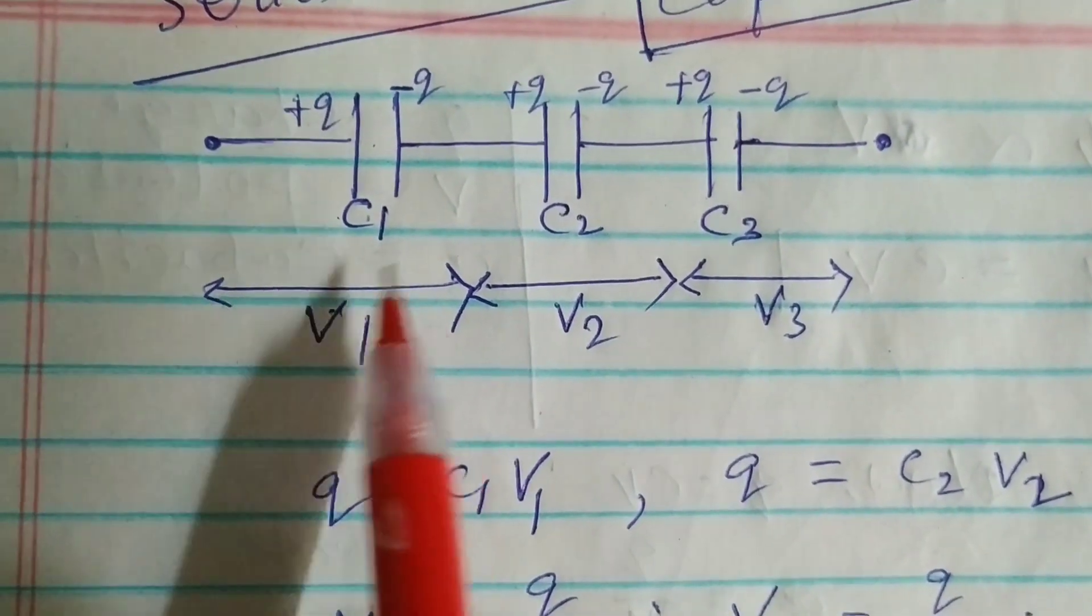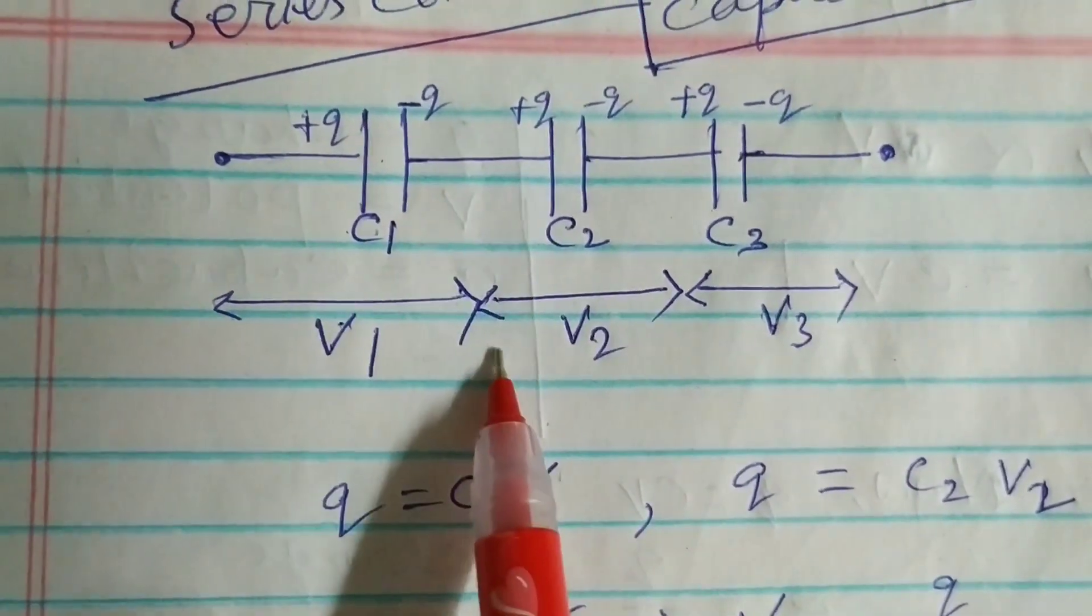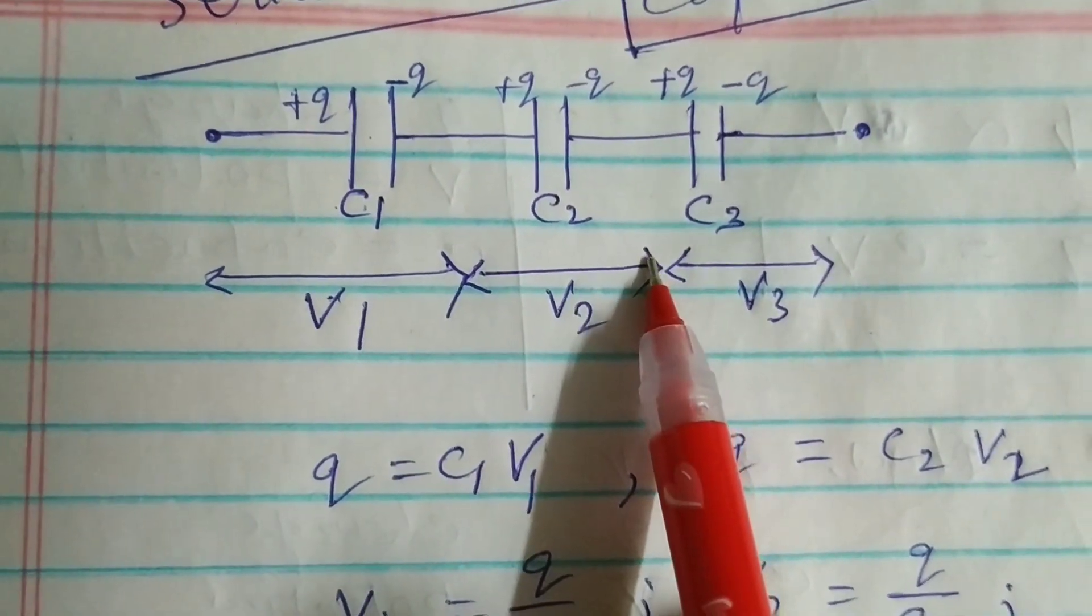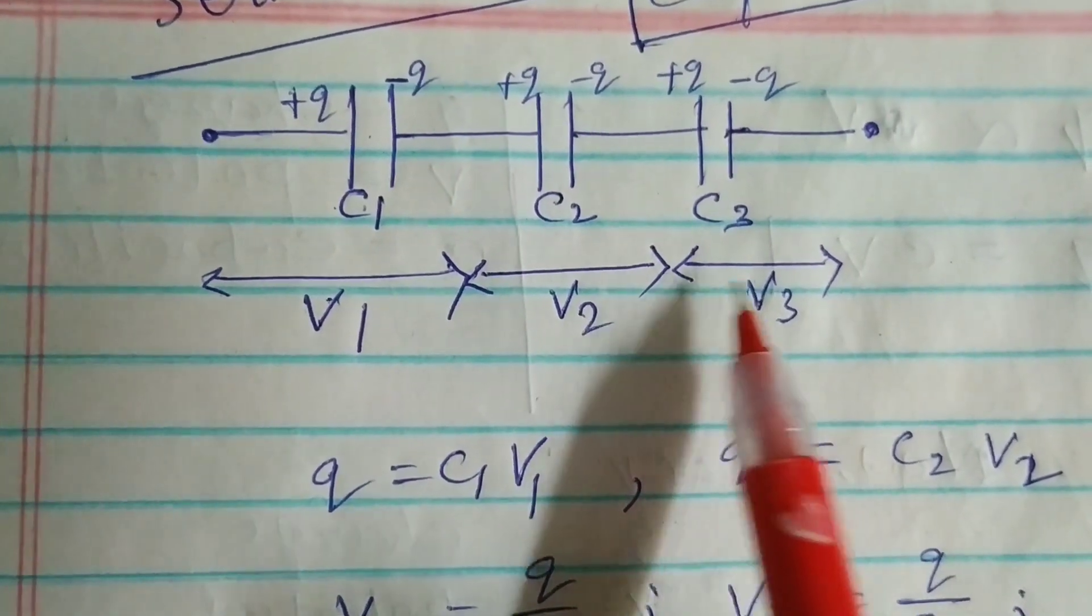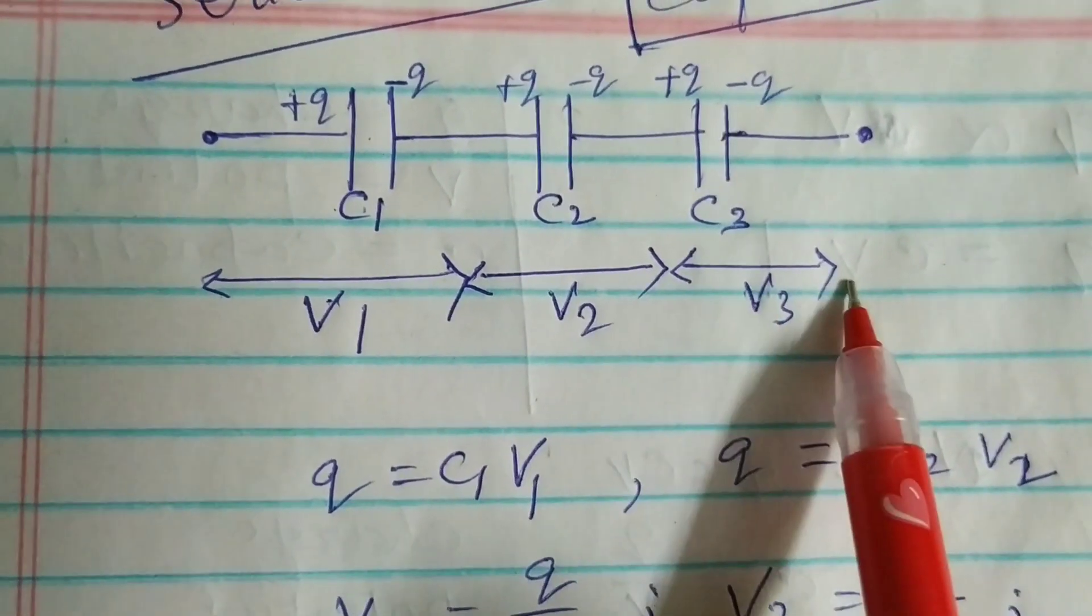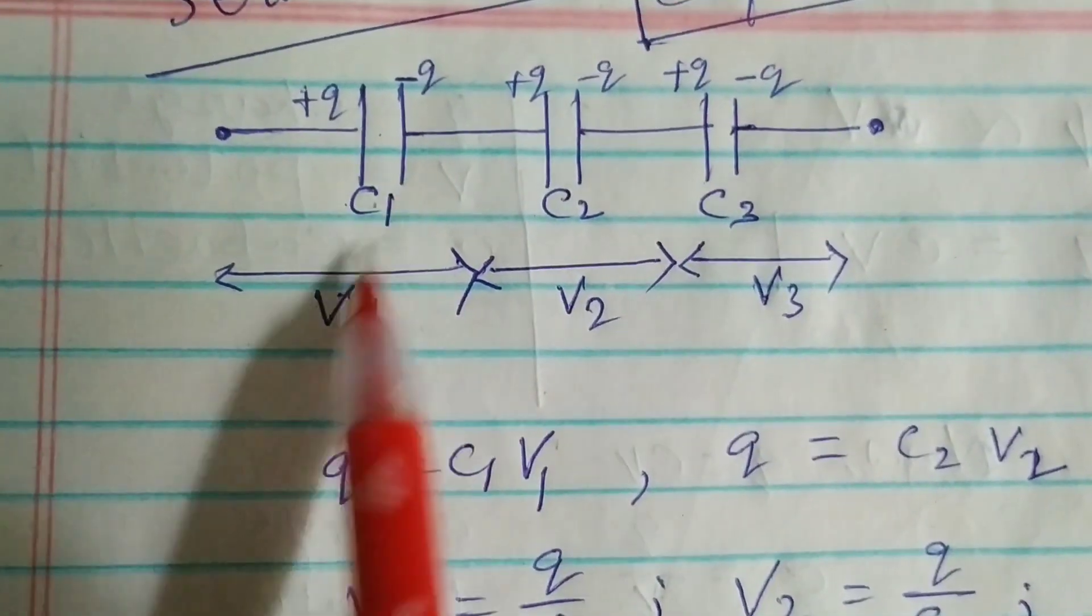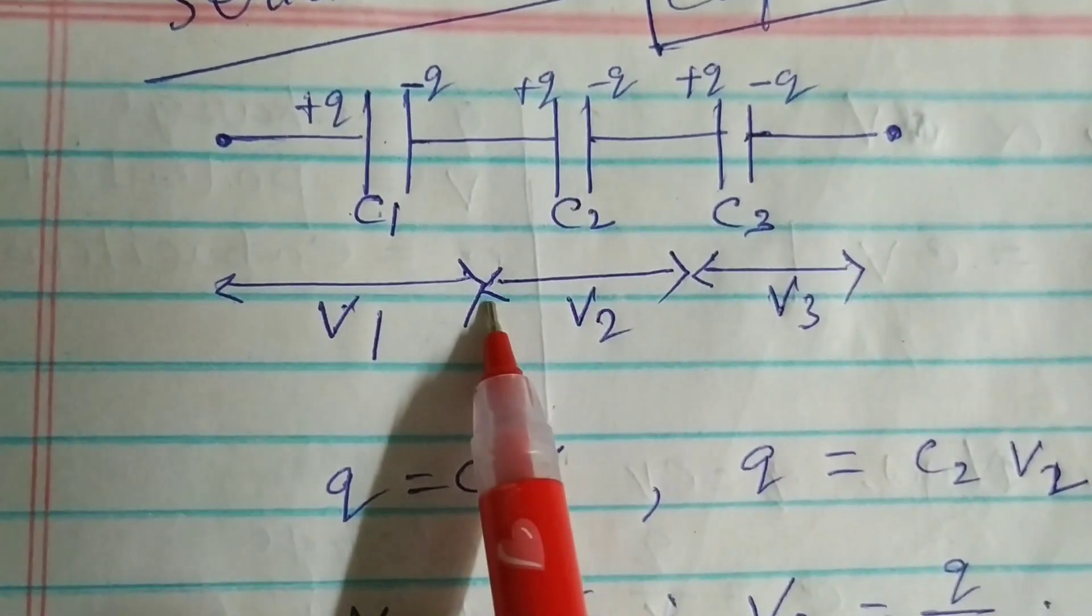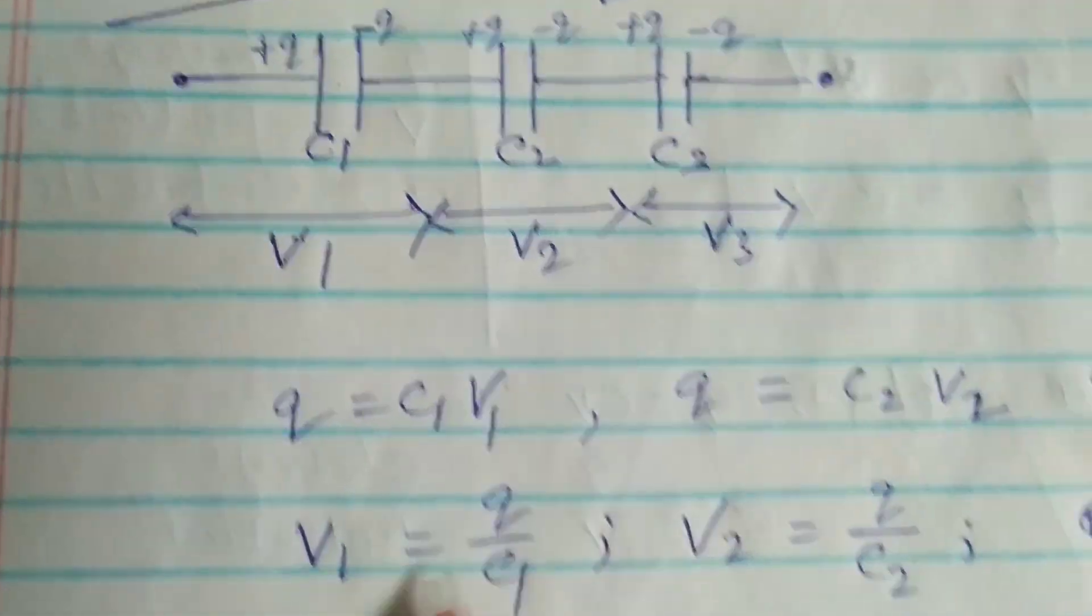Now between this point and say midway here, the potential is V1. From here to there midway, the potential is V2, and from here to there the potential is V3. So this capacitor is under the potential V1, this capacitor is under the potential V2, and this capacitor is under the potential V3.